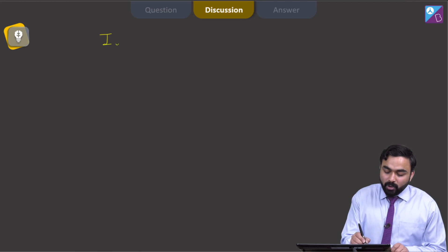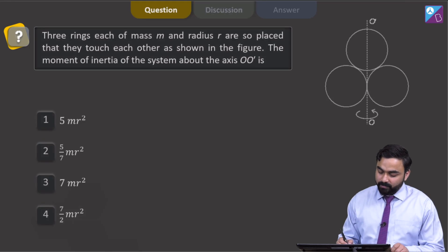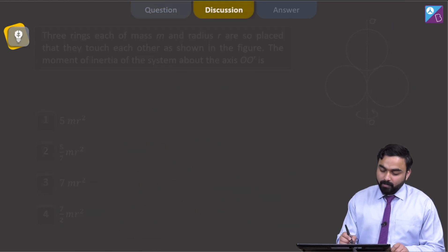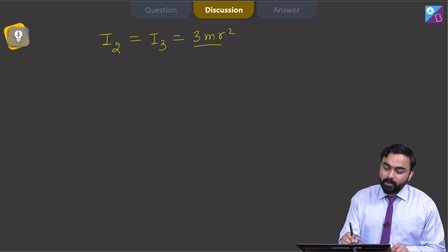So, the moment of inertia of ring 2 equals the moment of inertia of ring 3, which comes out to be 3mr²/2.